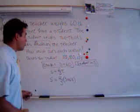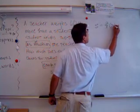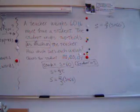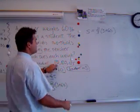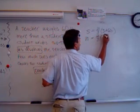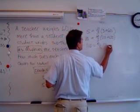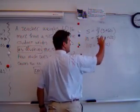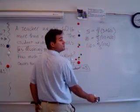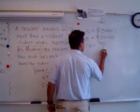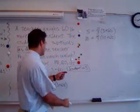Now I plug each domain value in one at a time. The equation is S equals two-thirds times (S plus 60). Let's try 110. Is 110 equal to two-thirds times (110 plus 60)? 110 plus 60 is 170. Two times 170 is 340. Is 340 over 3 equal to 110? No — because 110 times 3 is 330, not 340. Doesn't work with 110.